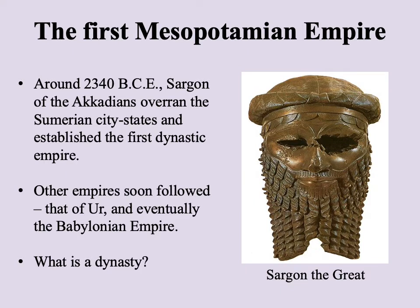From a fairly early point, the ambition of kings seems to have been to create empires. For a while the different city-states were in conflict with no one emerging as the top power. The first to actually put together an empire in Mesopotamia was Sargon of the Akkadians. The Akkadians were a new people who came into the region and under his rule overran the Sumerian city-states to establish the first dynastic empire in 2340 BCE. 'Dynastic' refers to the manner of succession: when the ruler dies, he is succeeded by the most eligible male heir — usually a son, sometimes a brother.